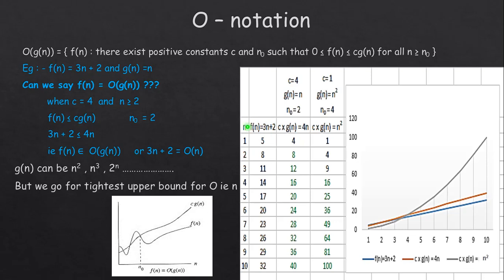Looking at the table with n values from 1 to 10: f(n) = 3n + 2 gives 5 when n = 1 and 8 when n = 2. c·g(n) = 4n gives 4 when n = 1 and 8 when n = 2. In the first row, 3n + 2 is greater than c·g(n), violating the condition. From the second row onwards the condition f(n) ≤ c·g(n) is satisfied. So n₀ = 2, and for all n ≥ 2 the condition holds. Therefore 3n + 2 = O(n).